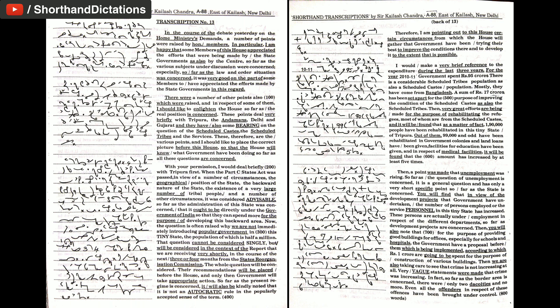Then, you will also note that for the purpose of providing good buildings for offices, especially for schools and hospitals, the government have a proposal before them which is being implemented according to which Rs. 1 crore are going to be spent for the purpose of construction of various buildings.